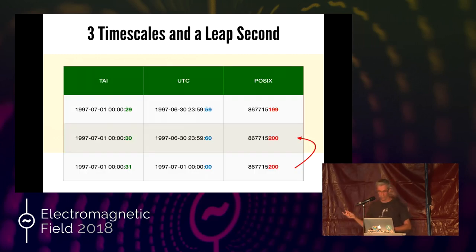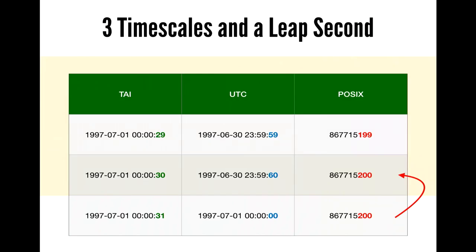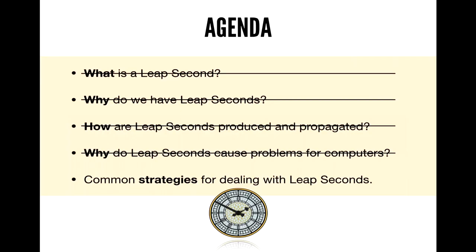Here's an example of how that looks: atomic time is on the left, ticking away without leap seconds — it just happily ticks 29, 30, 31. UTC does have leap seconds and pops a 60 in there. But Unix actually represents that as a single number defining two seconds. So that's a problem — bugs can come out of that kind of thing.